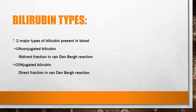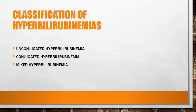Bilirubin is mainly two types: unconjugated bilirubin, which is the indirect fraction in van den Bergh reaction, and conjugated bilirubin, which is the direct fraction. Based on this, we have classified hyperbilirubinemia as unconjugated hyperbilirubinemia, where the level of unconjugated bilirubin is increased, and conjugated hyperbilirubinemia, where the level of conjugated bilirubin is increased, and the mixed type where both are increased.